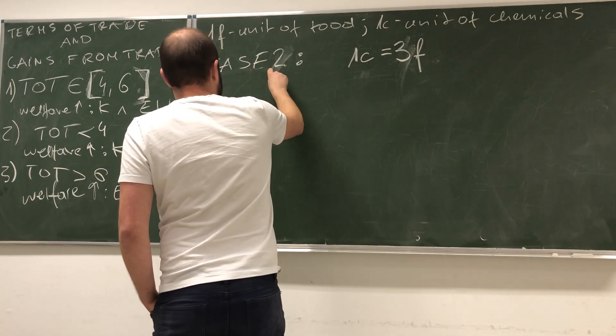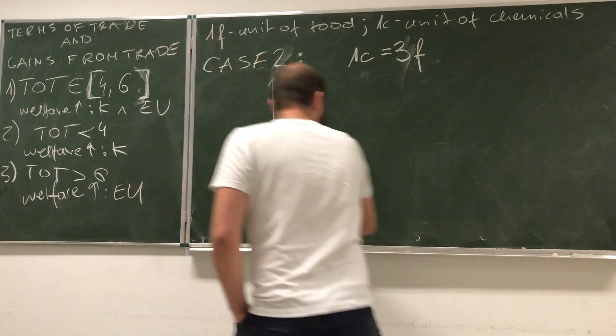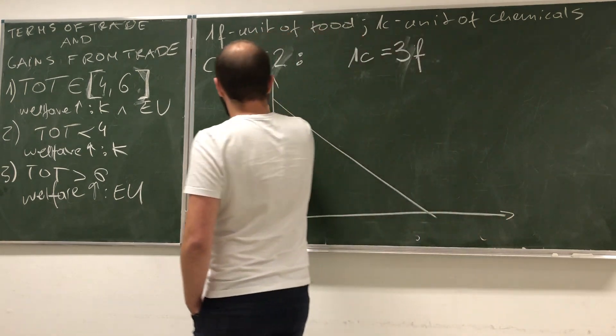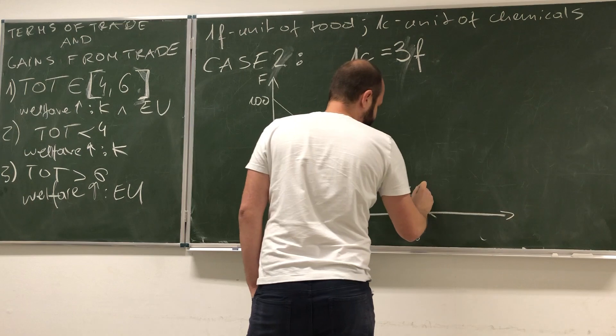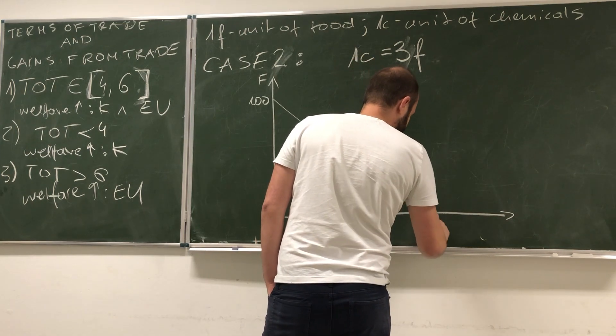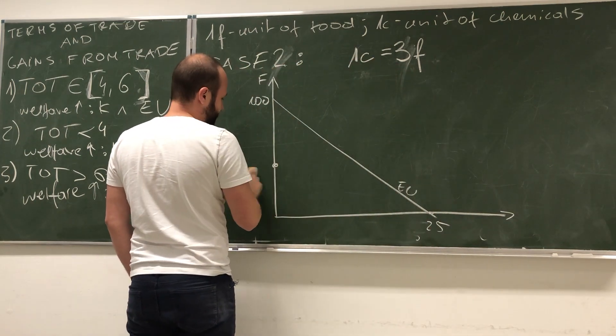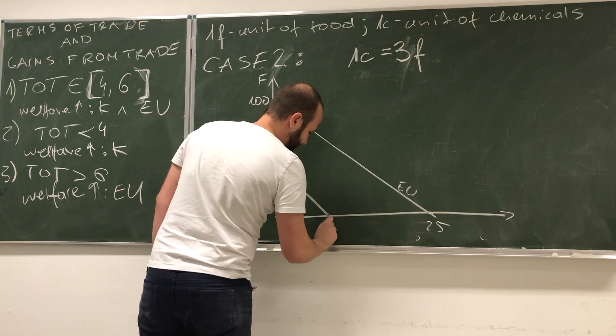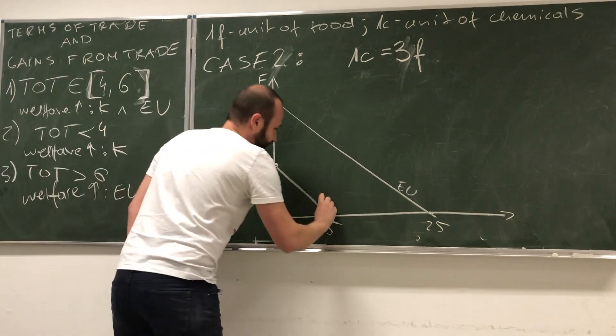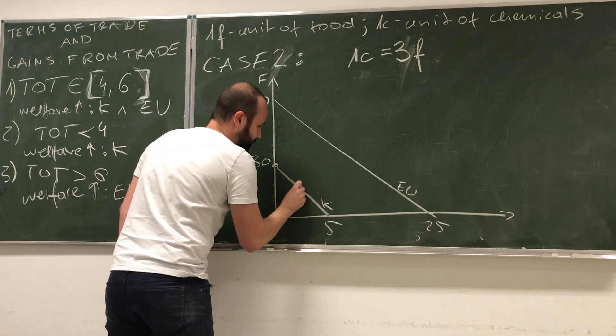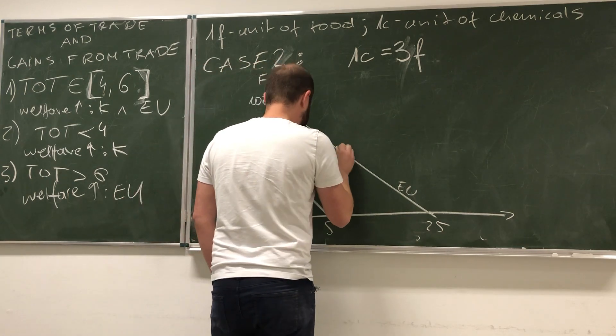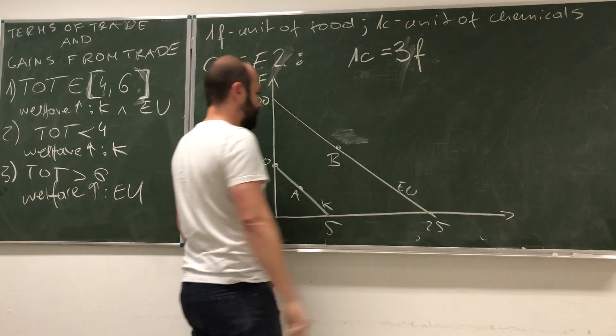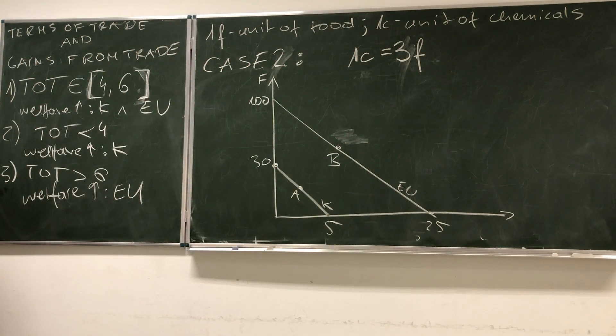What happens now? Again, we need to draw the old production possibility frontiers. First for EU, and the second one for Kenya. It was 30 and 5. Here we have Kenya. And again, we can choose some point A and some point B as the preferred consumption point.